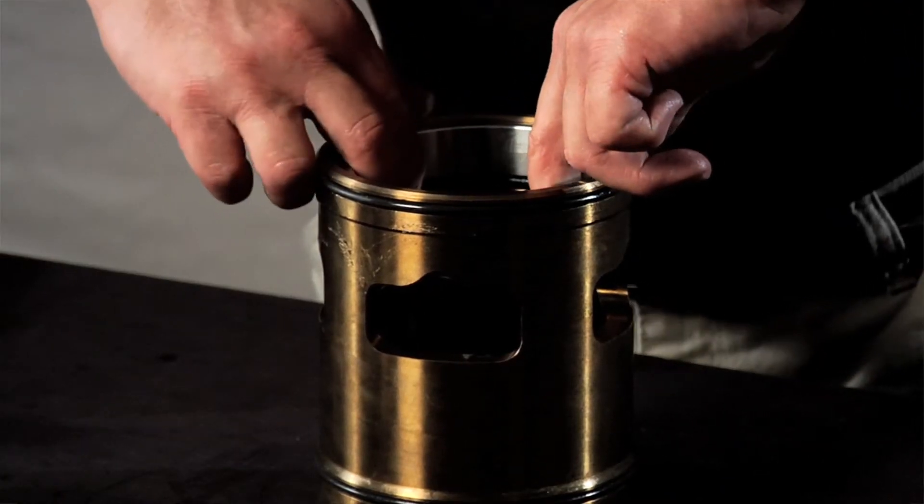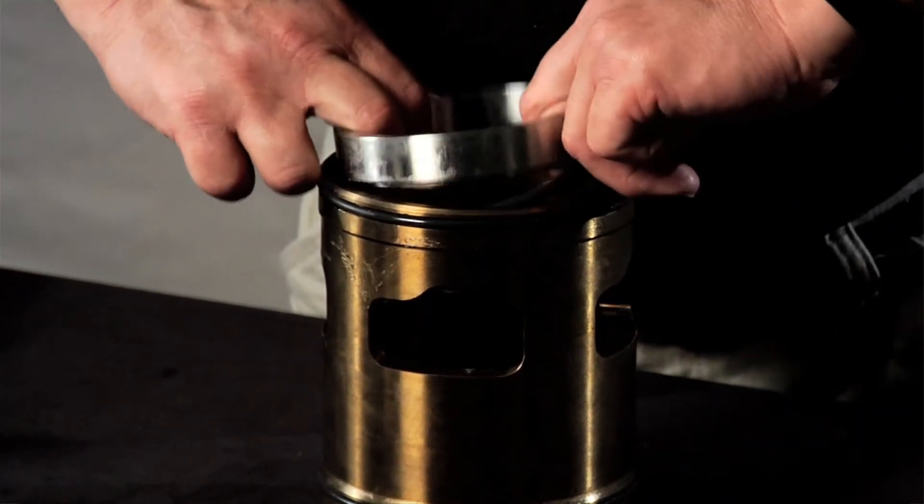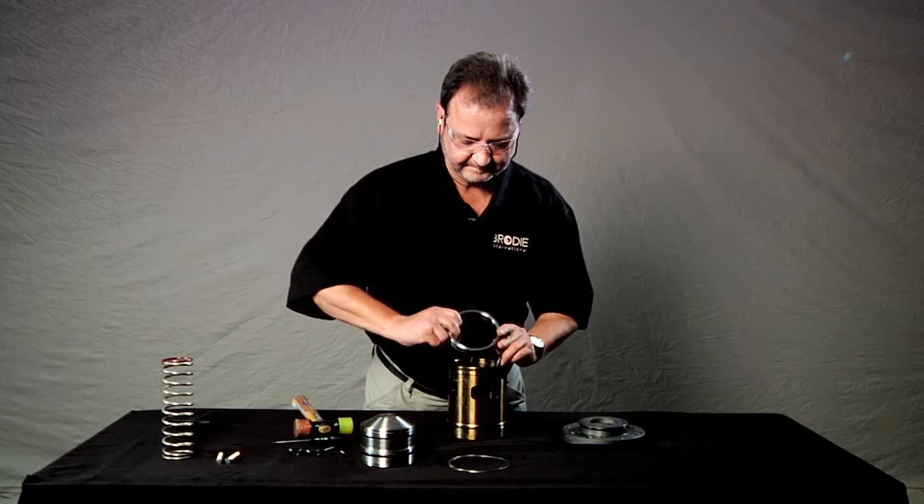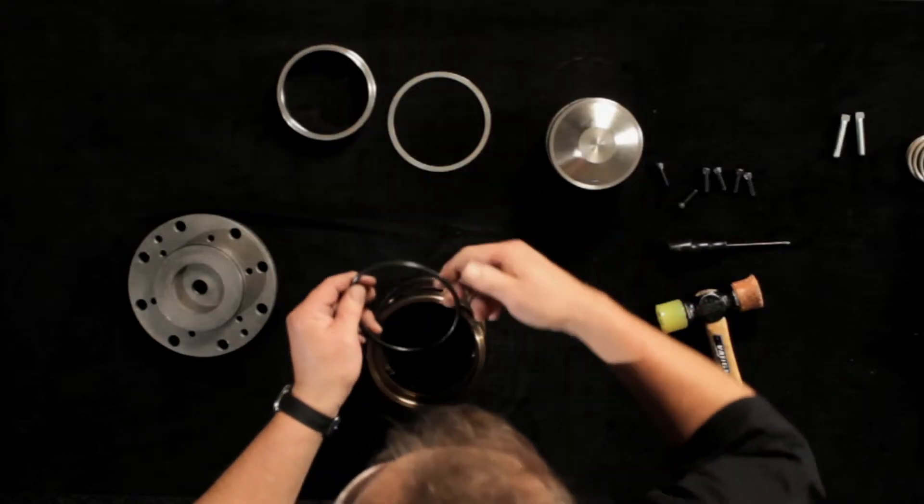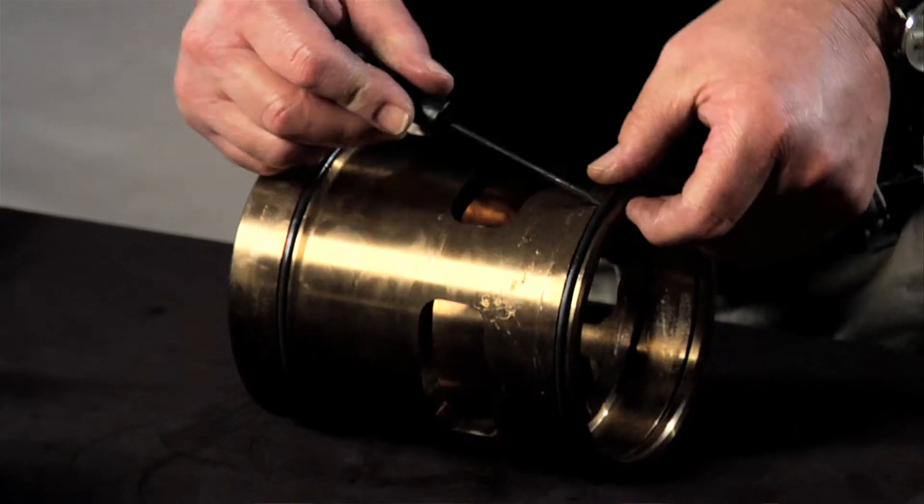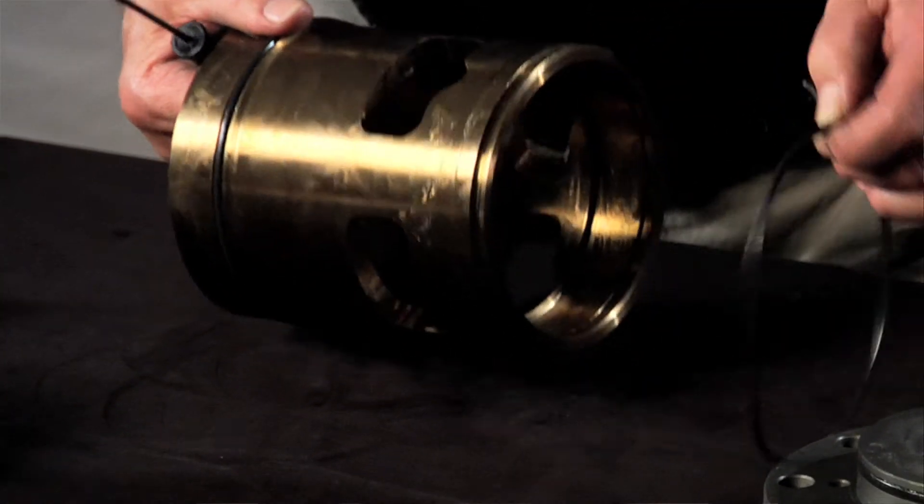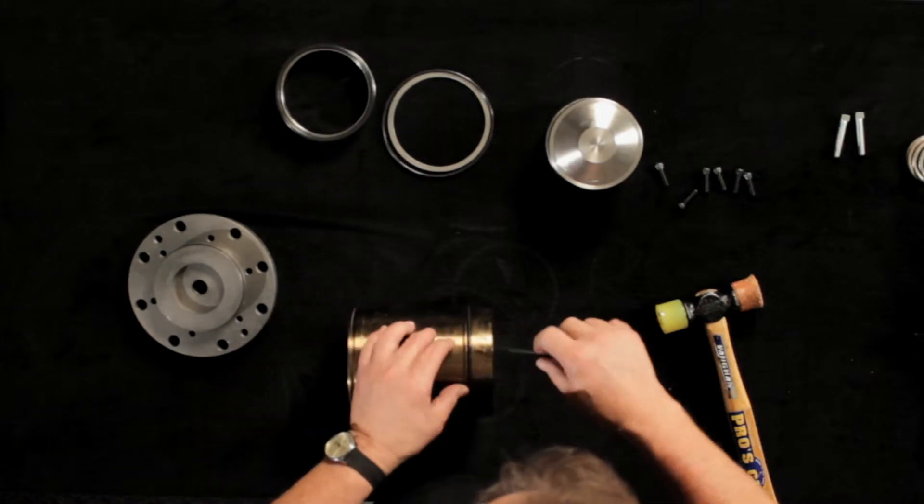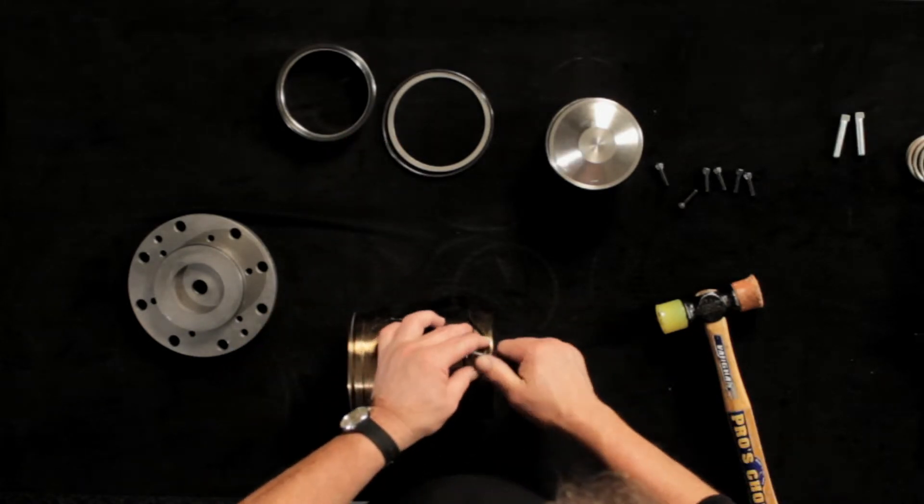Remove the seal ring and the seal. These should come out easily by hand. Then, using your screwdriver, remove the outside seals from the top and from the lower part of the cylinder, and the cylinder head seal.